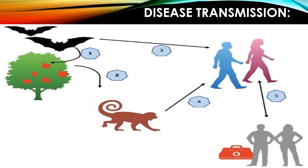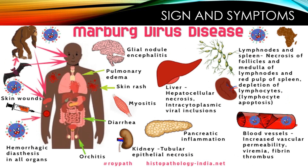There are many precautions needed when dealing with this disease. The signs and symptoms of Marburg disease affect all organs of the human body, from the brain to the intestine and liver.